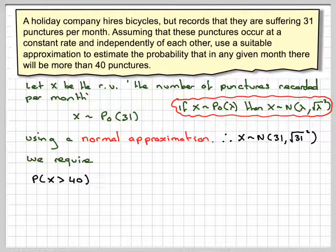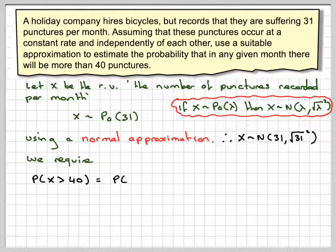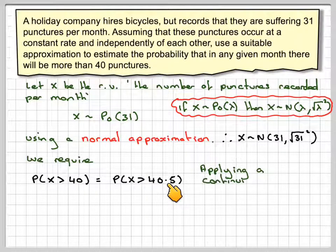We are required to find the probability of X being bigger than 40. We have to apply a continuity correction, so we need the probability that X is bigger than 40.5.